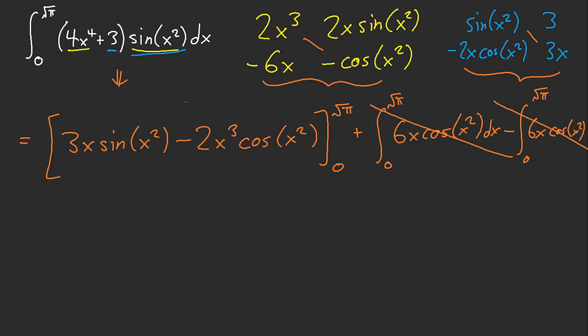So now that we have this, this is pretty much our answer here. We just plug in 0 and plug in √π. Plugging in 0, we know everything's going to be 0, so we just have to focus on √π here. This gives us 3√π sin(π), I believe that is 0, and then we have negative 2 root π cubed, that's π√π, and then cos(π). Cos(π) is negative 1, so our answer is just 2π√π.